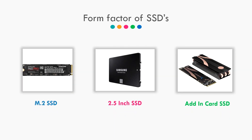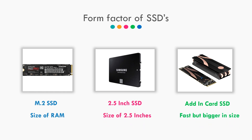M.2 is smaller and looks like a stick of RAM. 2.5 inch SSD is of course 2.5 inches, and add-in card SSDs are quite bigger in size. Add-in card is quite a fast SSD and some of them have inbuilt coolers to control thermals, which is great. But due to the size it occupies on the motherboard, it is not practical to use. So that's why you'll only see M.2 and 2.5 inch SSDs in the market.